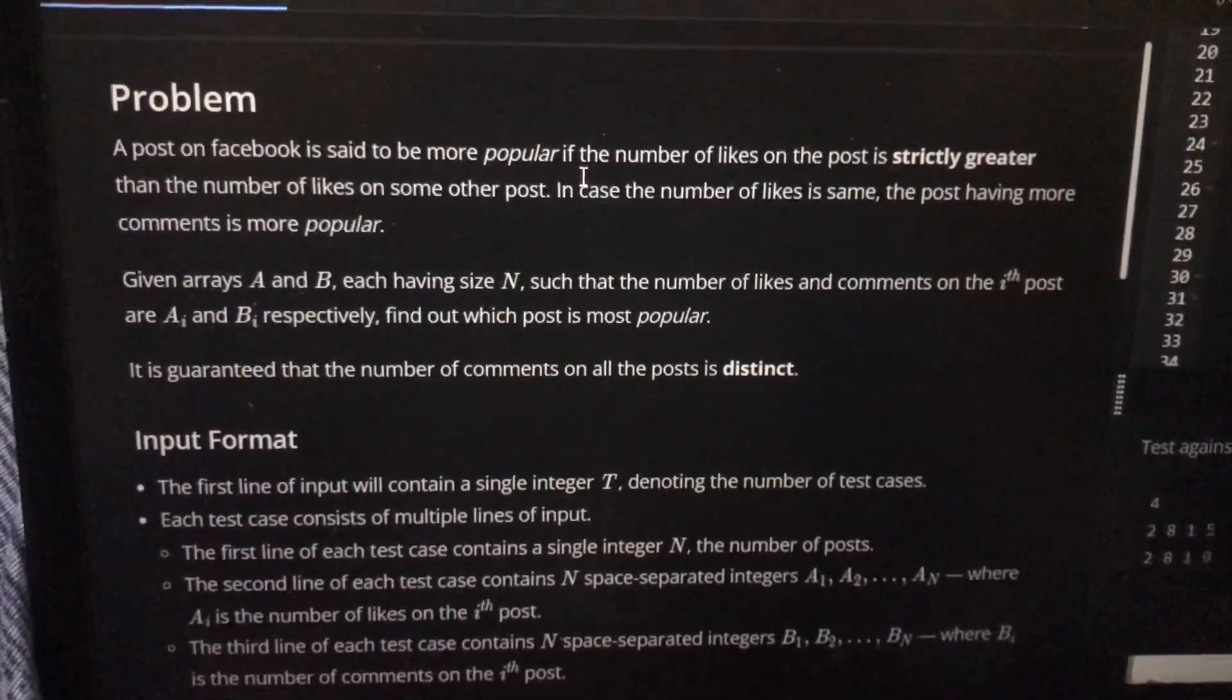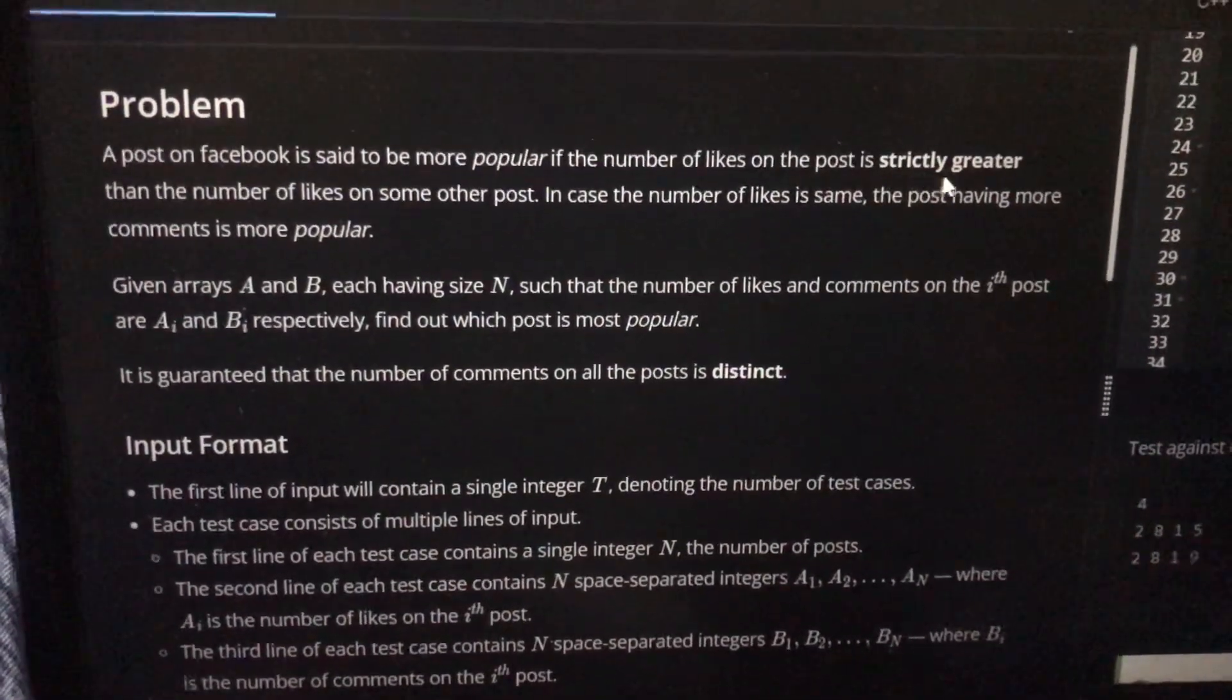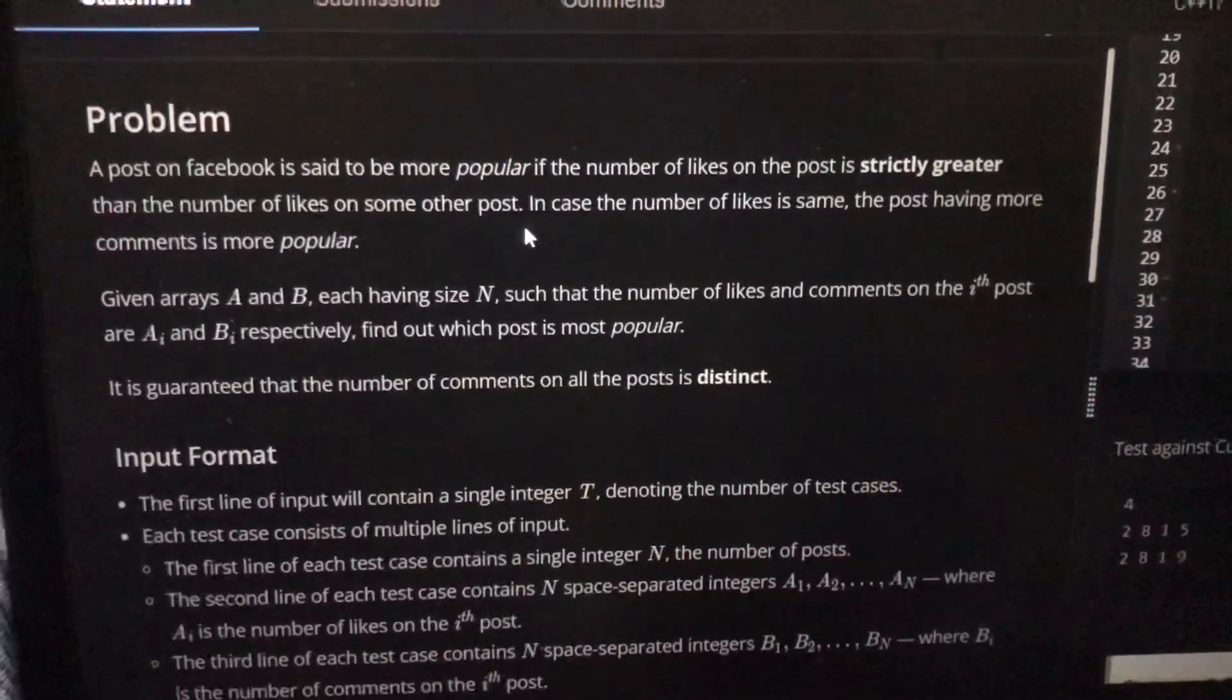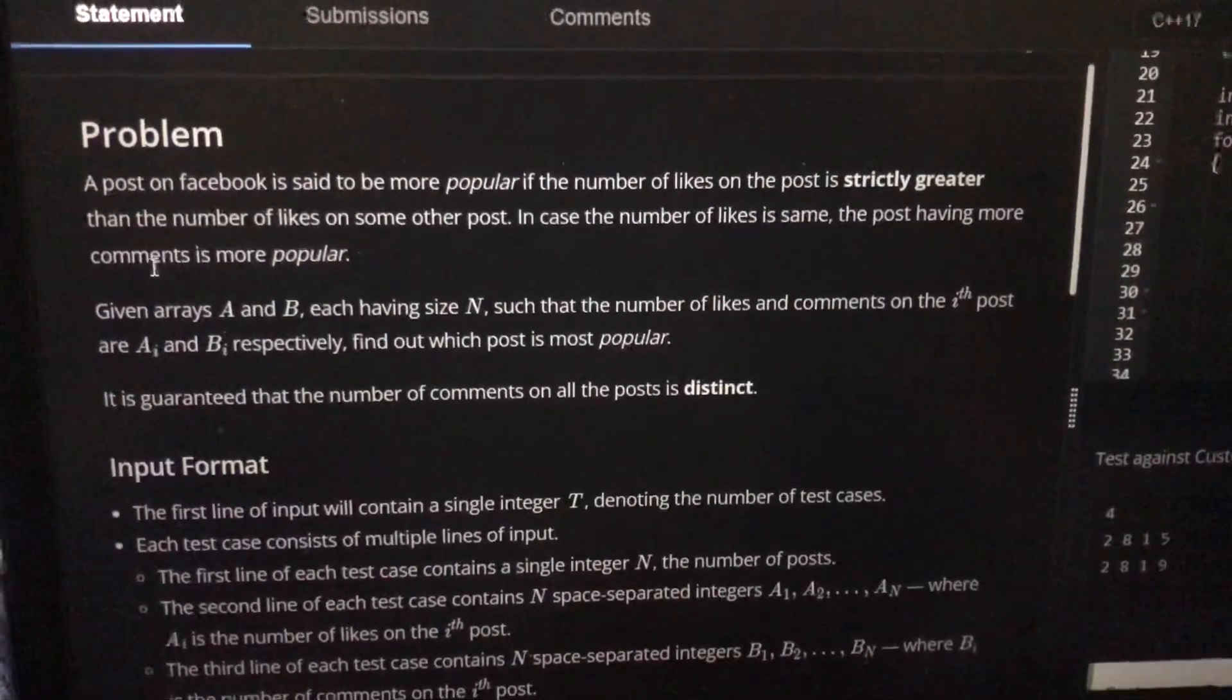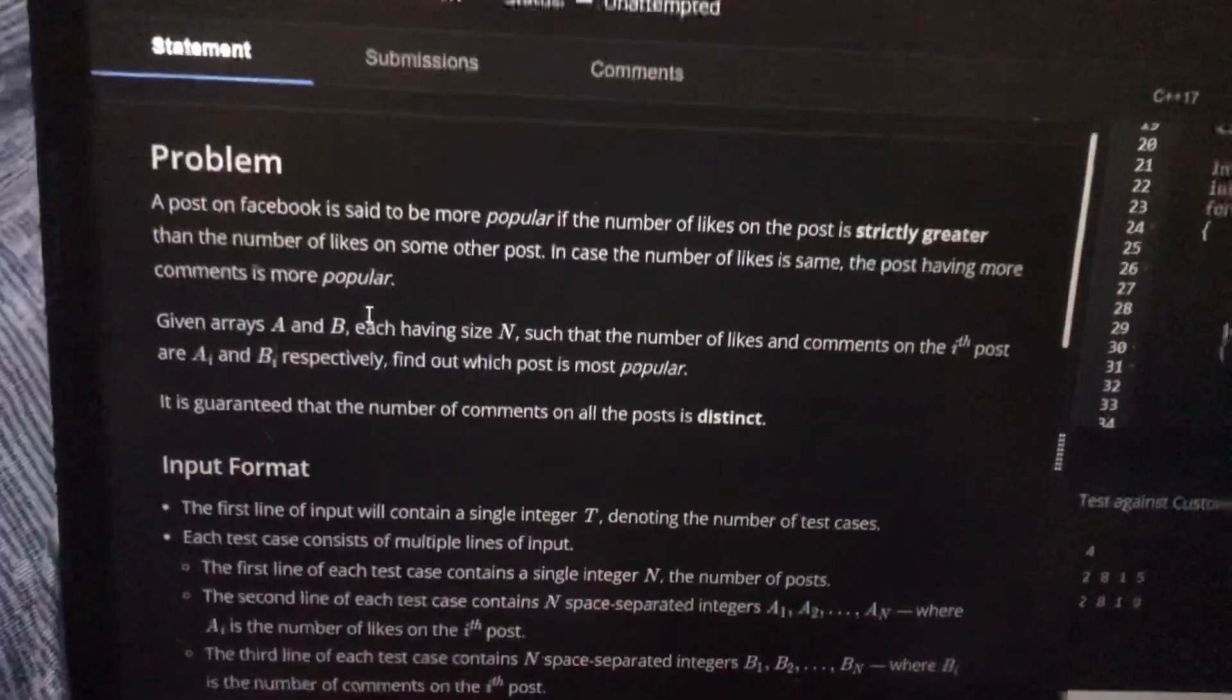A post on Facebook is said to be more popular if the number of likes on the post is strictly greater than the number of likes on some other post. In case the number of likes is the same, then the post having more comments is more popular.